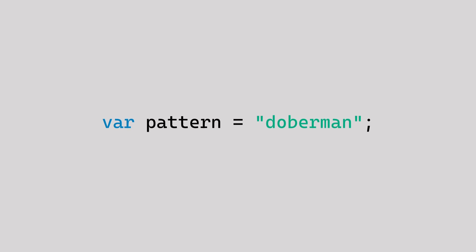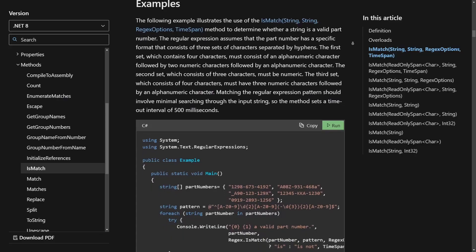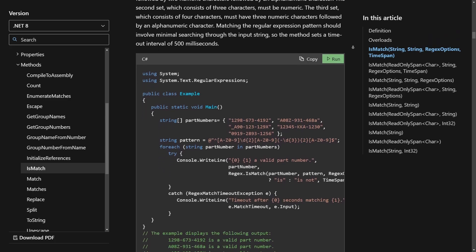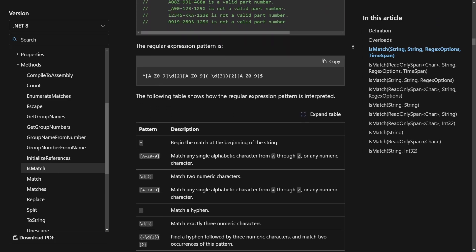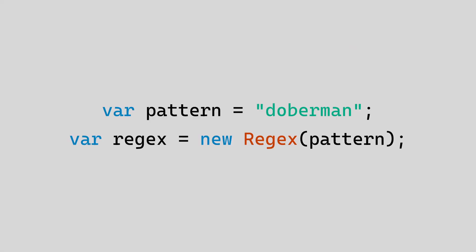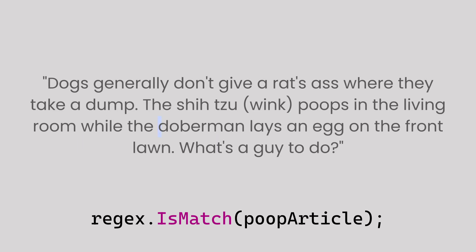Now that you know what you're looking for and have a pattern set up, the next thing you'll do is create a regular expression object and pass the pattern as the first argument. If the programming language you're using supports regular expressions, there should be some equivalent regex class that contains all the properties and methods you need, so be sure to check the documentation. From the regex object you just created, use the isMatch method and pass the paragraph about dogs as the argument. This method looks through the text for anything matching the word Doberman, and if such a word exists in the text it returns true; if not, it returns false.